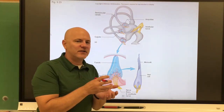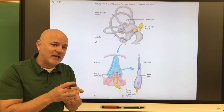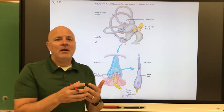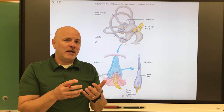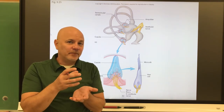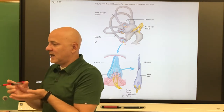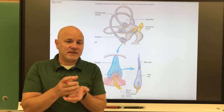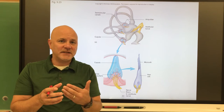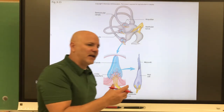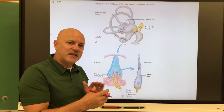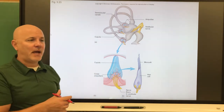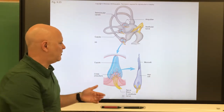There is endolymph on either side of the cupula. To understand what happens, consider a glass full of water: if you stop suddenly while walking, the water spills forward — that's Newton's first law, a body in motion stays in motion. And if you turn quickly, the water spills behind you — a body at rest stays at rest. These same principles of inertia apply to the endolymph in the semicircular canals.